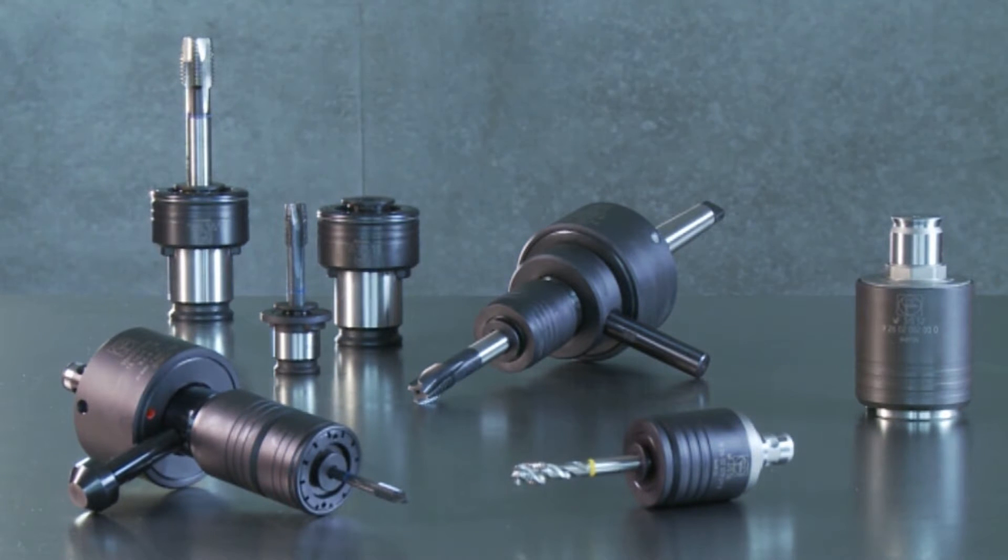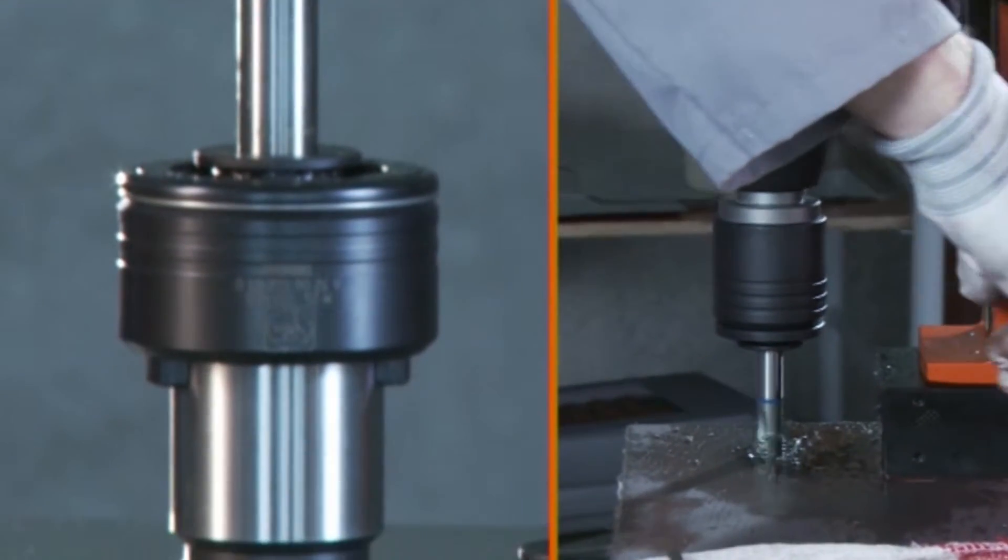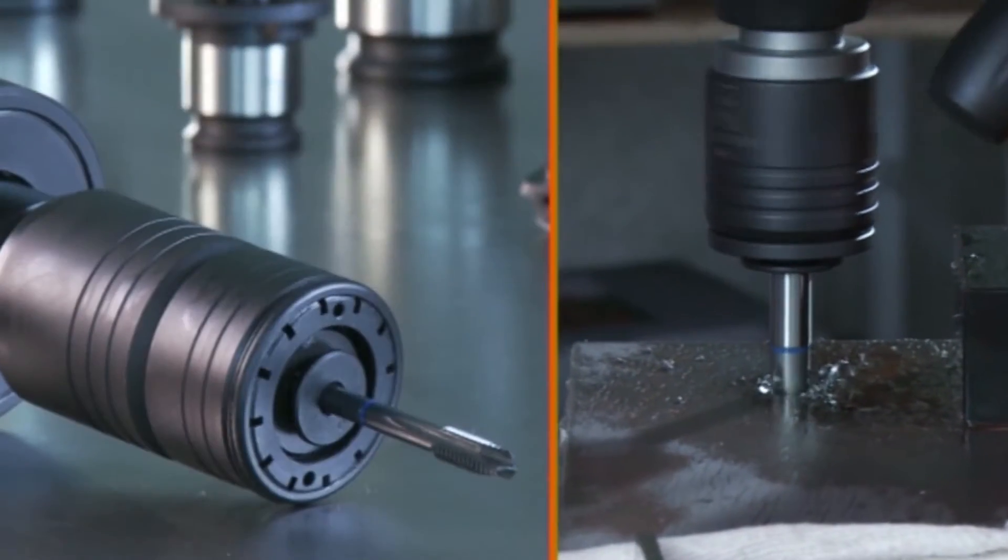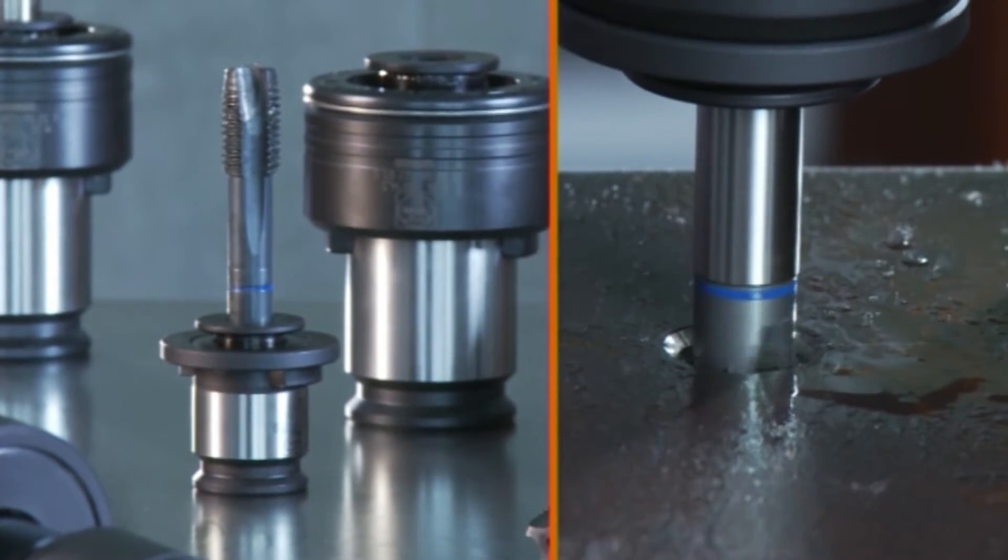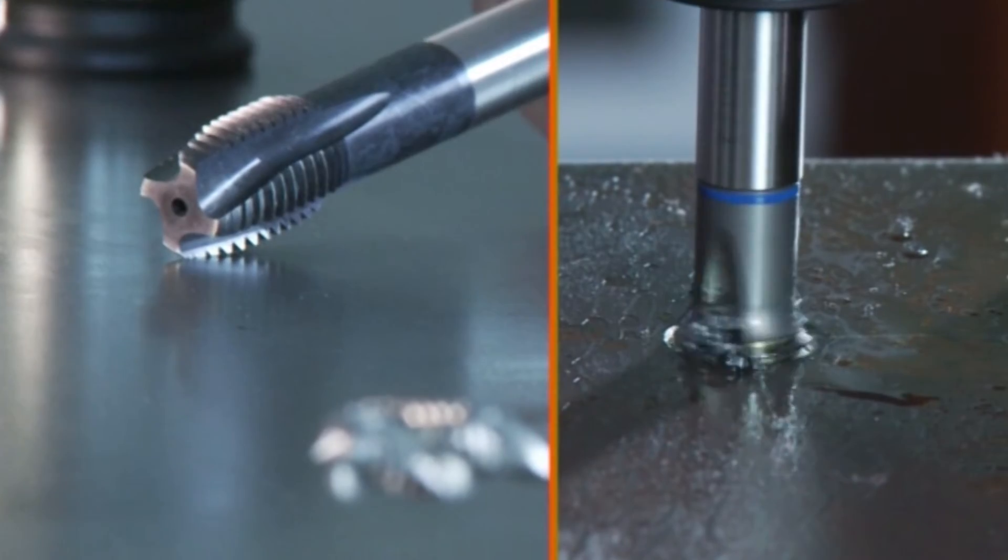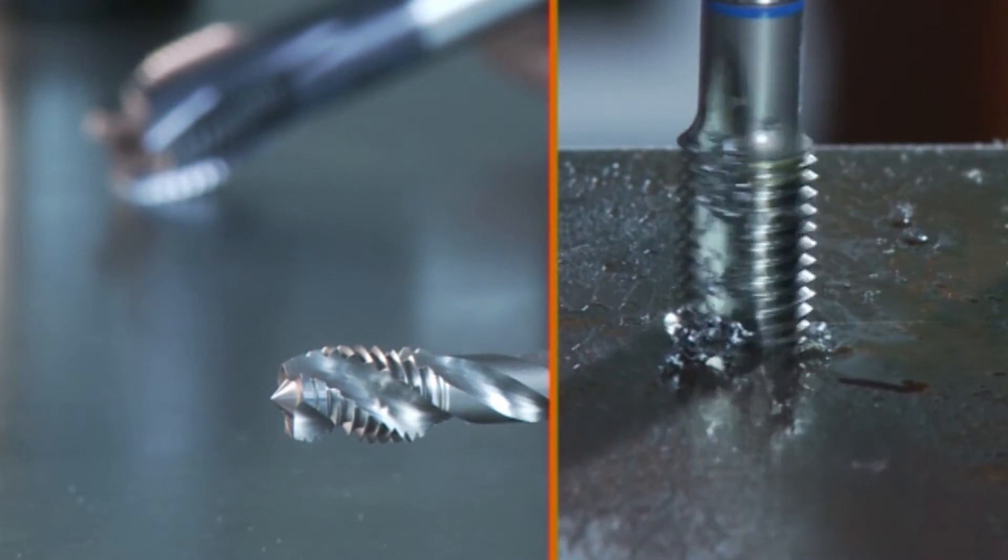In addition to a quick change tapping chuck, appropriate taps and collets are needed for tapping. Taps are available in various diameters and lengths, each with a defined straight and square shaft for precise concentricity and perfect torque transfer.